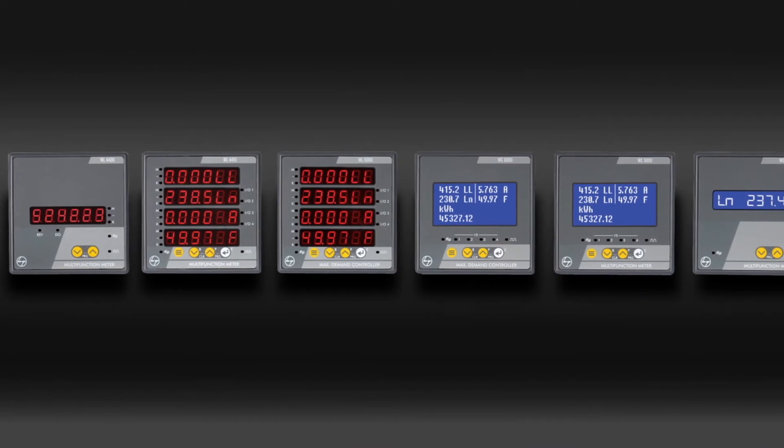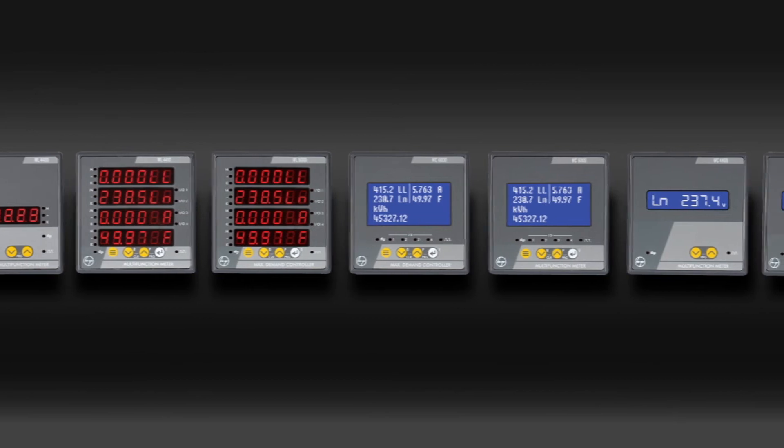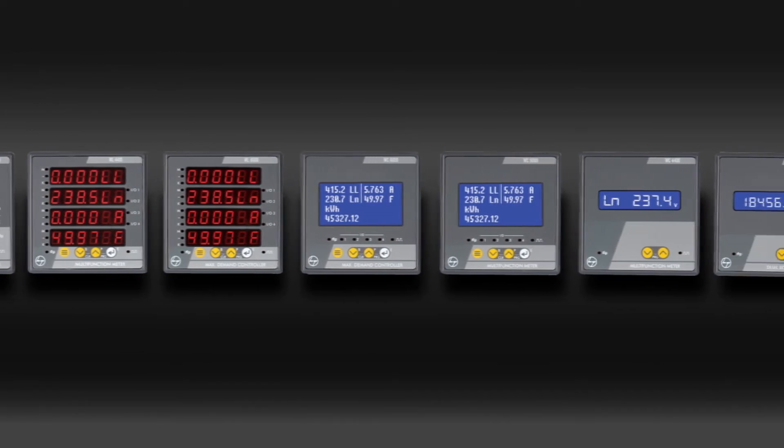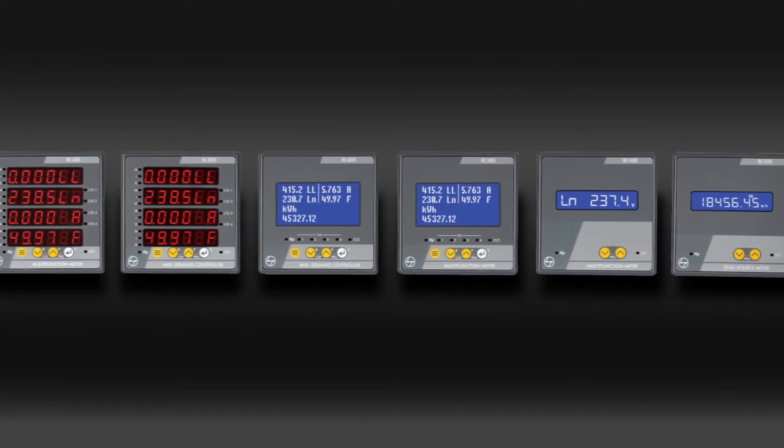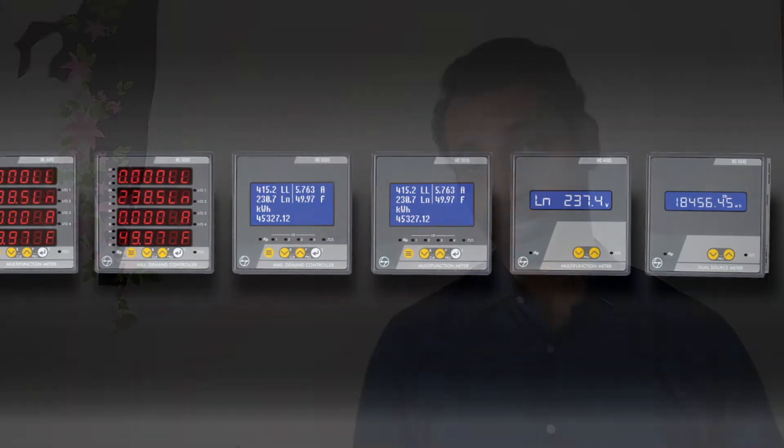Our meters offer universal auxiliary supply of 80 to 300 volt AC and DC in the entire meter series range. These meters offer a uniform wiring and a mounting style which is common in the entire series. The programming of these are quite simple and uniform in the entire series for a 2 button as well as for a 4 button multifunction meter.